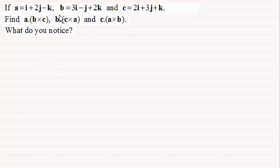I've given you three vectors a, b and c and asking you to work out the triple scalar product for a dotted with b cross with c, b dotted with c crossed with a and c dotted with a cross with b and then what do you notice?